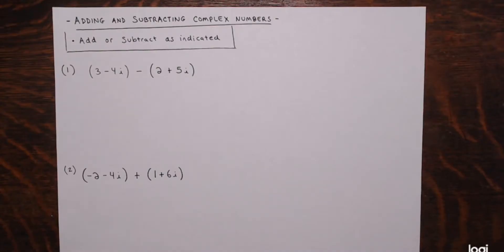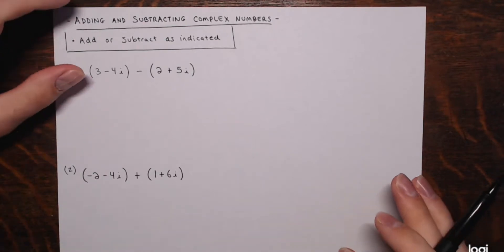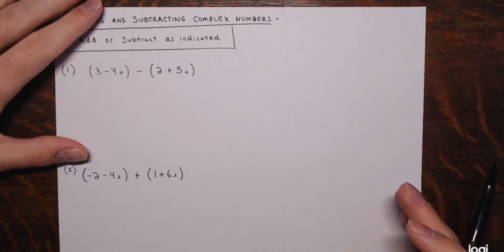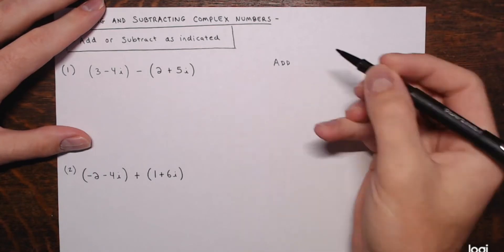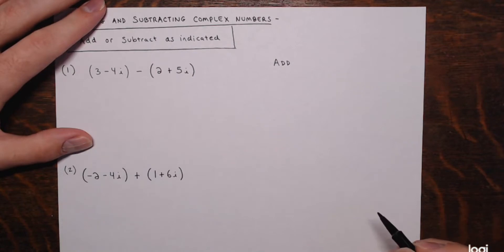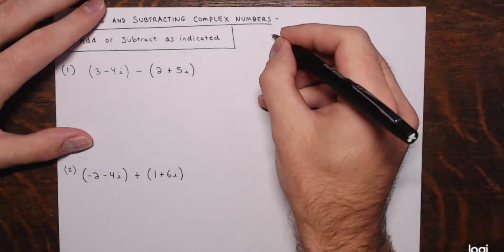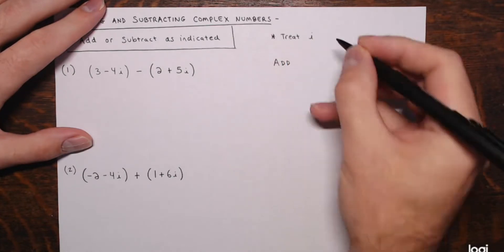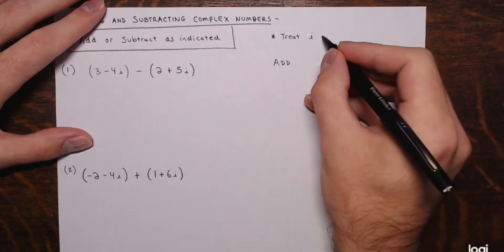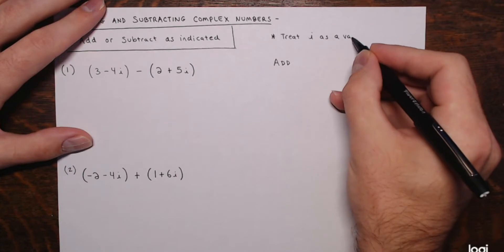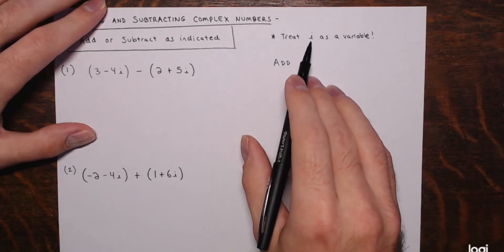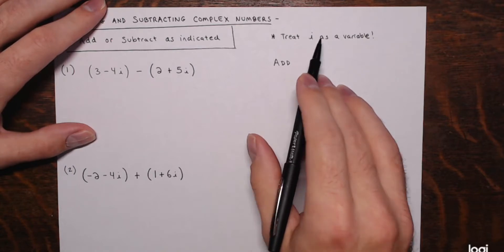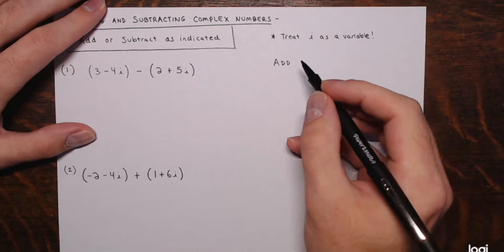So I have the examples written out here. We're asked to add or subtract complex numbers as indicated. Adding and subtracting is very similar to when you were adding and subtracting polynomials. A little tip: treat i — the imaginary unit i — as a variable, even though it is not. Remember, i is the principal square root of negative one. But if you treat it like a variable, it'll be just like adding and subtracting regular polynomials.